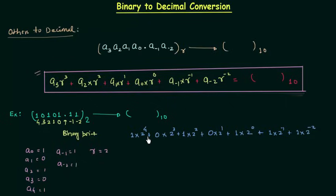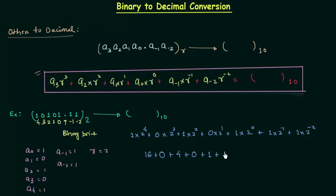Now we will simplify this. 2 raised to power 4 is 16, and 16 multiplied by 1 is 16. 2 raised to power 3 is 8, and 8 multiplied by 0 is 0. 2 raised to power 2 is 4, multiplied by 1 is 4. 2 raised to power 1 is 2, multiplied by 0 is 0. 2 raised to power 0 is 1, multiplied by 1 is 1. For the fractional part we have 1 divided by 2 raised to power 1, plus 1 divided by 2 raised to power 2, which gives us 1/2 plus 1/4.